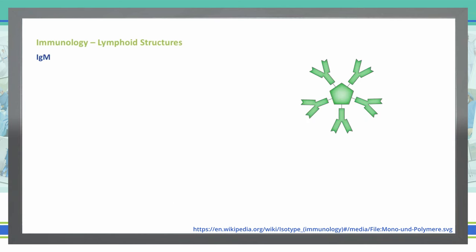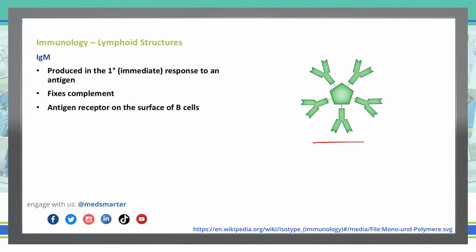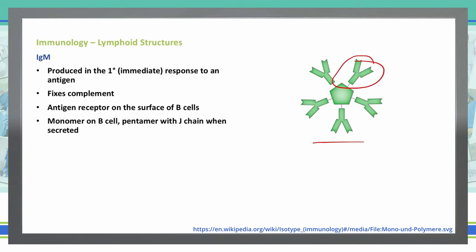IgM is the large pentamer we saw earlier, with five monomers attached. These are produced in the primary, or immediate, response to an antigen — the first immunoglobulin produced by the body when exposed to an antigen. IgM also fixes complement, and it acts as an antigen receptor on the surface of B cells, where it will be a monomer. When it has a J-chain, they are secreted as a pentamer. The pentamer enables binding to an antigen while the humoral response evolves.